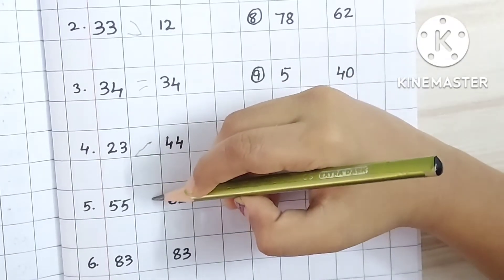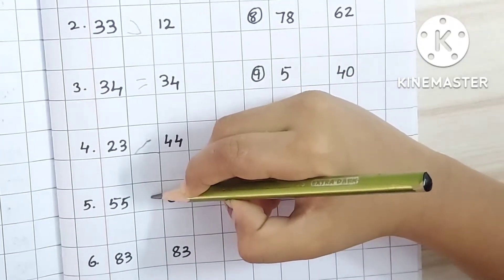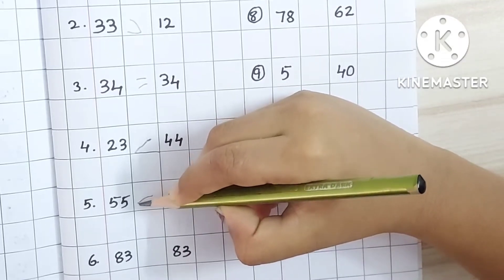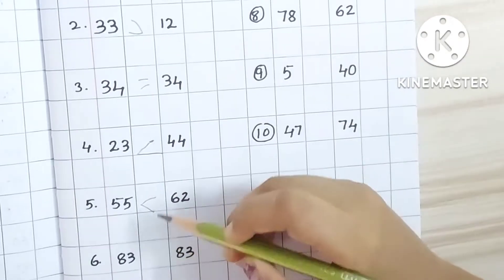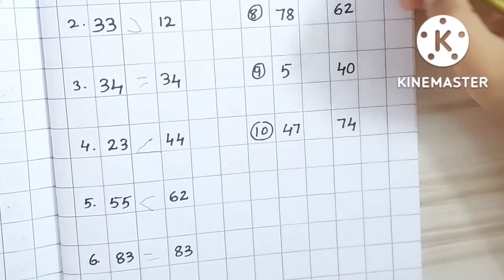Fifty-five, sixty-two. Sixty-two. Yes, good. Eighty-three, eighty-three. Equal to.